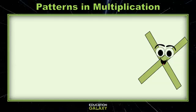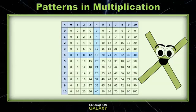Let's look for another pattern. Next, we have a multiplication chart, and we are going to look at the column underneath the 4 and then the row next to the 4. What do you notice about those numbers?